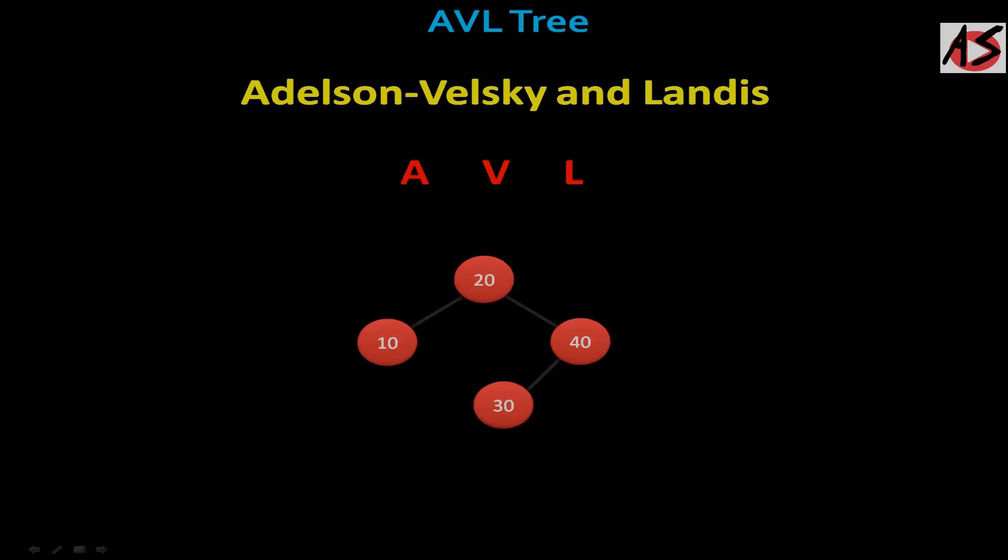AVL trees named after their inventors are height balancing binary search trees. AVL tree checks the height of the left and the right subtree and assures that the difference is not more than 1. This difference is called balance factor.